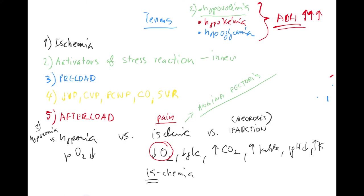A reminder about the stress reaction: in normal fight-or-flight stress, peripheral tissues are not well perfused — that's controlled by the sympathetic trunk. But muscles will be well perfused because you want to run or fight. We'll revisit this in the phases of shock. So those were the inner activators of the stress reaction. Let's get to preload.